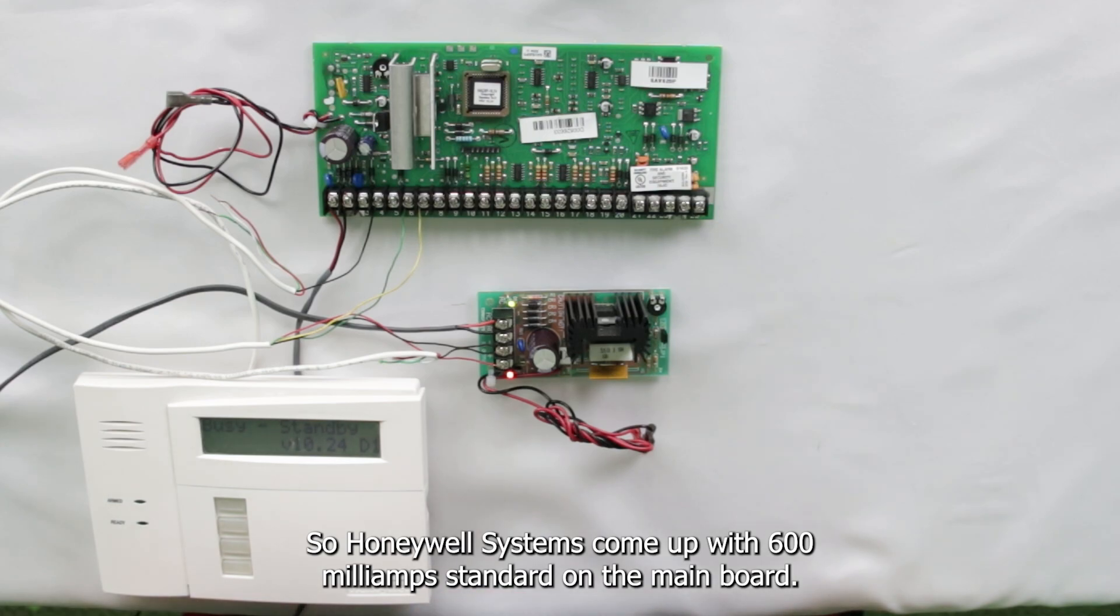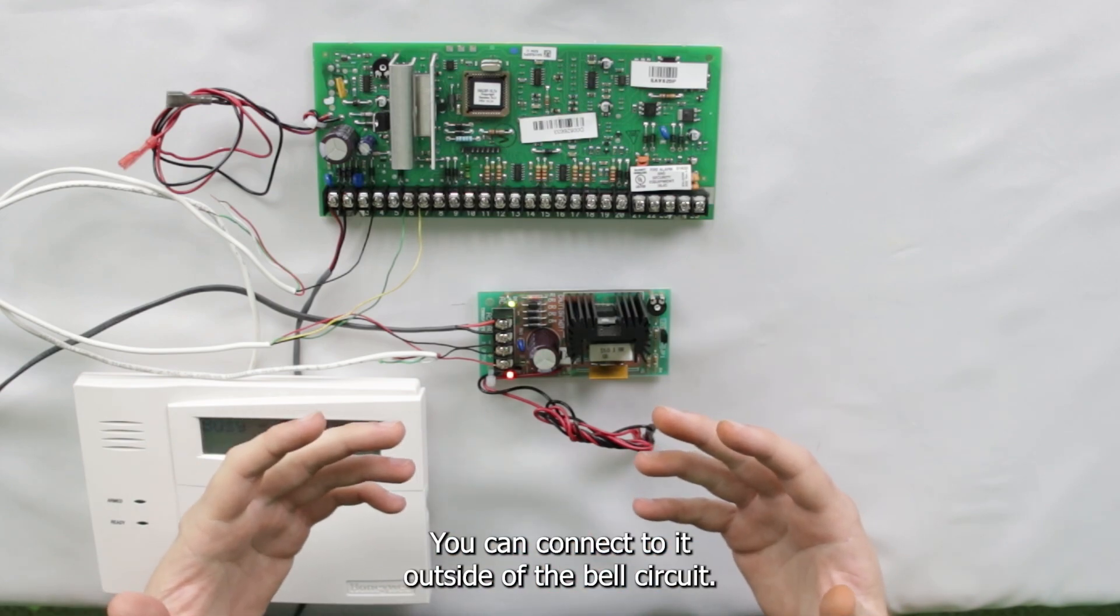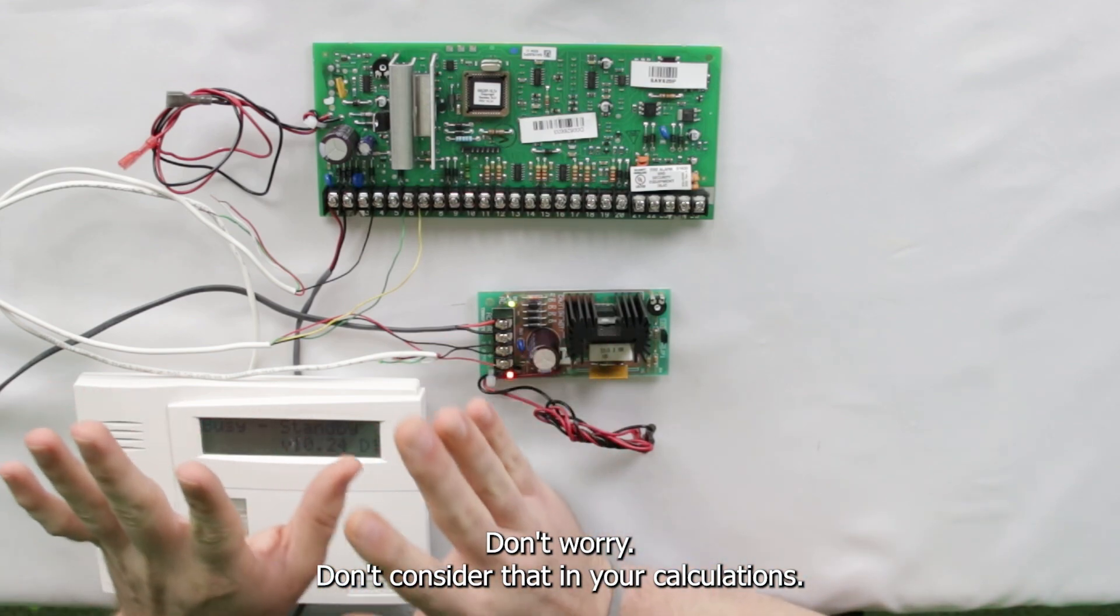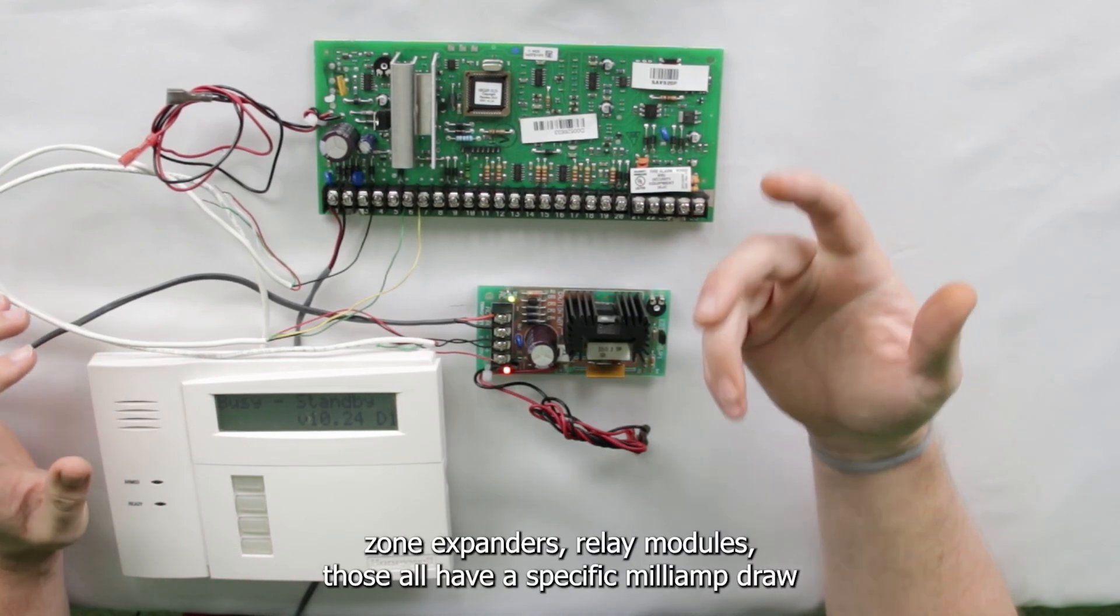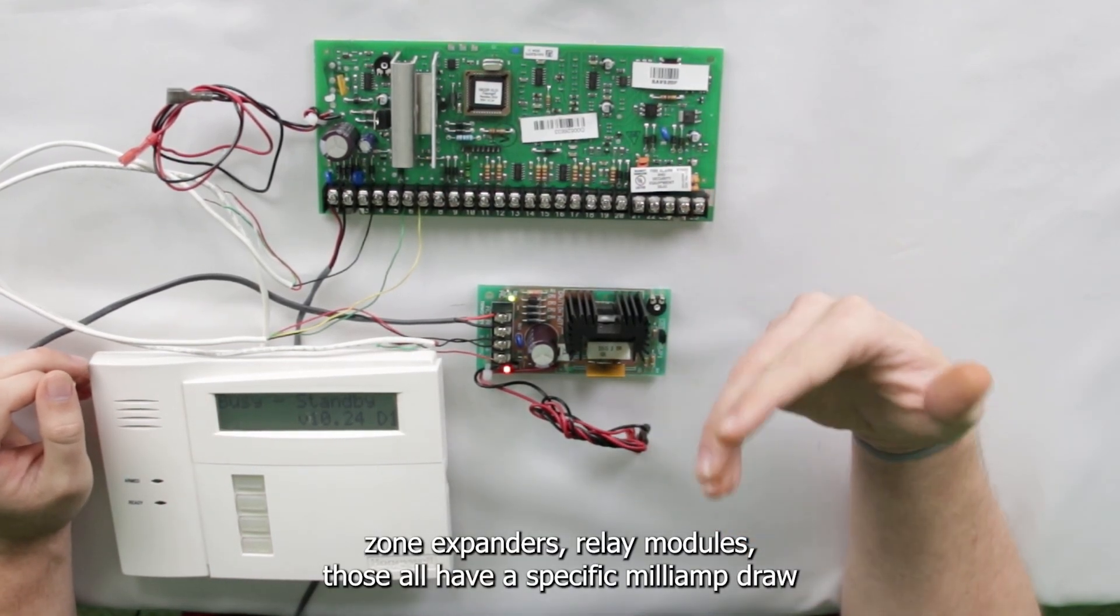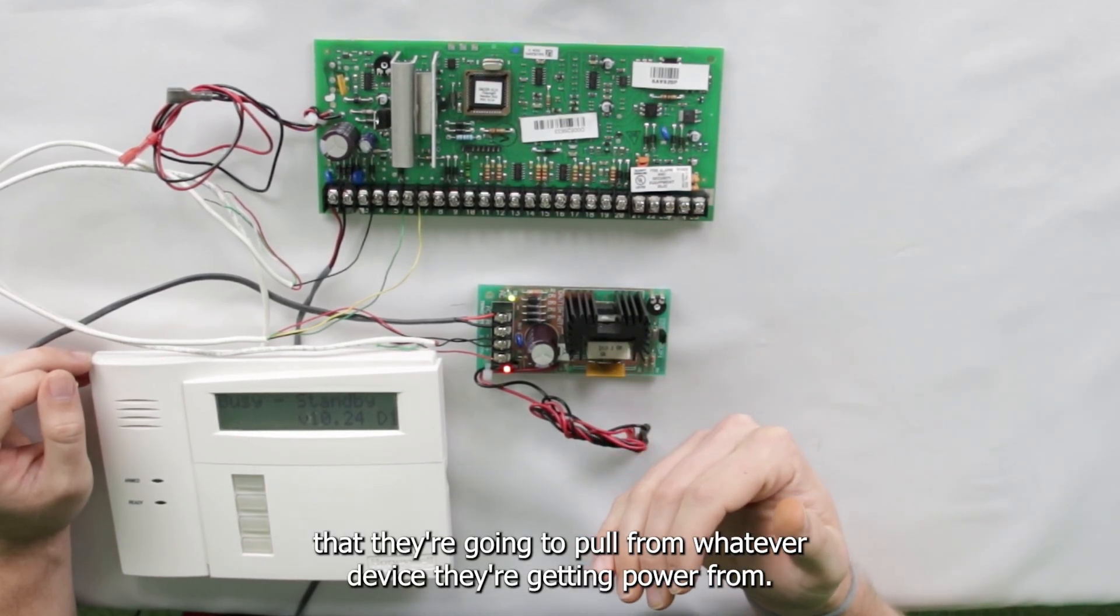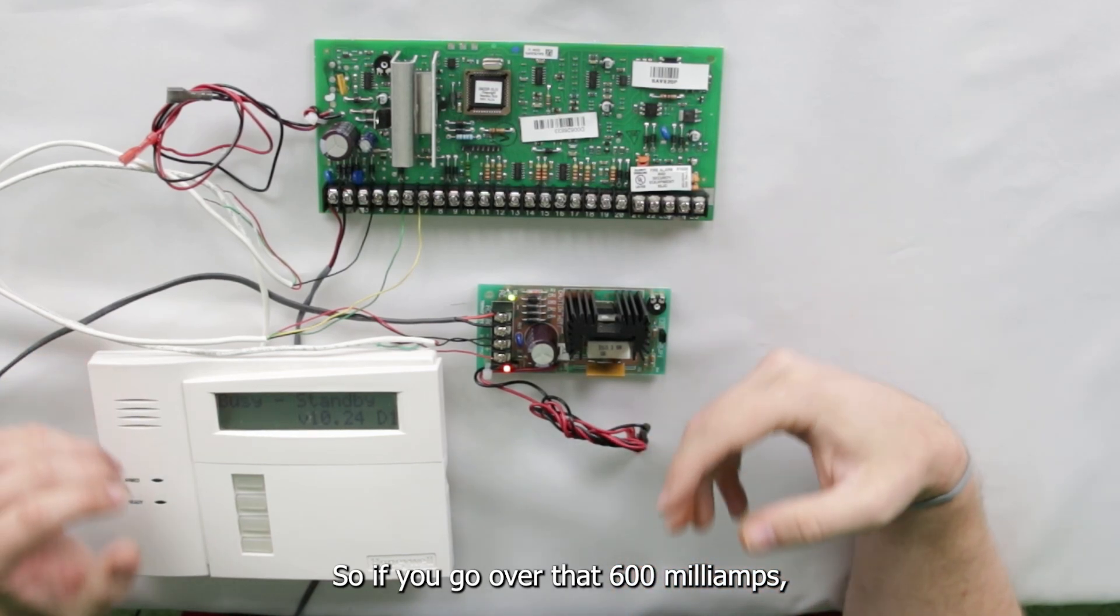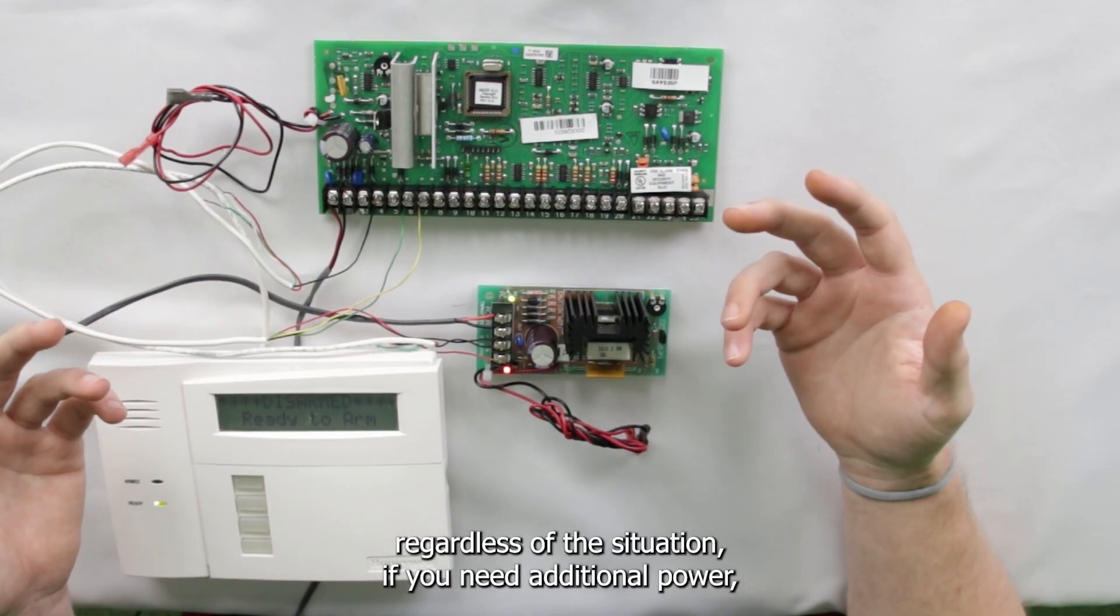So Honeywell systems come up with 600 milliamps standard on the main board. That's how much they can supply to everything you can connect to it outside of the bell circuit. That's always separate, don't consider that in your calculations. But whenever you're picking out modules such as keypads, zone expanders, relay modules, those all have a specific milliamp draw that they're going to pull from whatever device they're getting power from. So if you go over that 600 milliamps, basically it's not going to be able to handle all that, so certain devices will shut down.